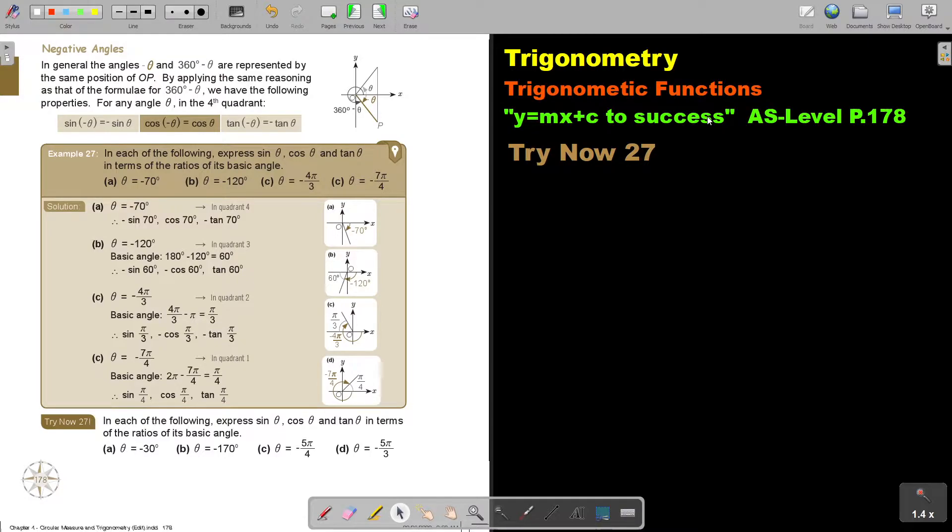In this video, we are going to focus on negative angles. In general, the angles negative theta and 360 minus negative theta are represented by the same position of OP. By applying the same reasoning as that of the formula for 360 minus theta, we have the following properties for any angle theta in the fourth quadrant.